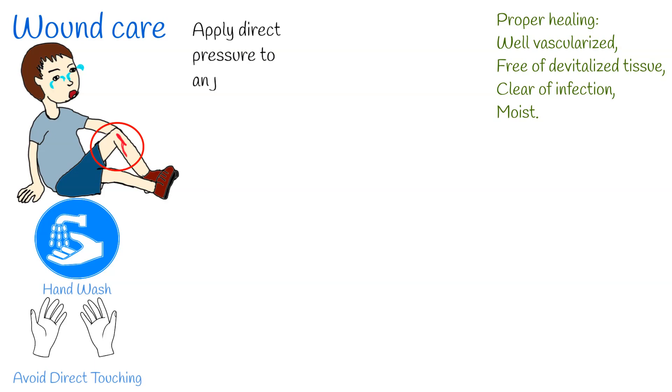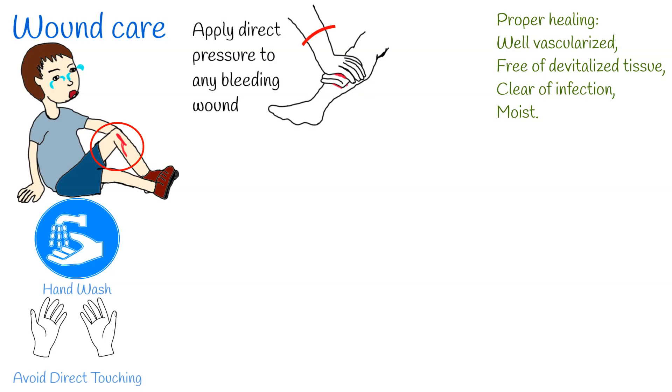Step 1: Apply direct pressure to any bleeding wound to control hemorrhage. Tourniquets are rarely indicated since they may reduce tissue viability.